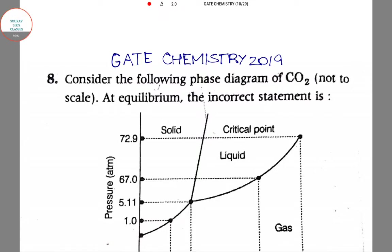Welcome to Soros's Classes. Today we will be solving a question of GATE Chemistry 2019. The question given to us tells us about the phase diagram of CO2 and asks us the incorrect statement about it.